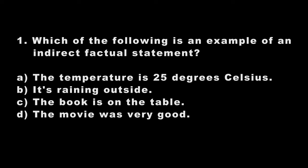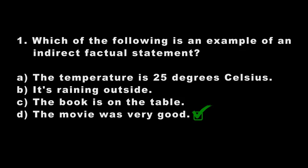Question one: which of the following is an example of an indirect factual statement? A — the temperature is 25 degrees Celsius; B — it's raining outside; C — the book is on the table; D — the movie was very good. The correct answer is D. 'The movie was very good' makes no specific factual specification — it only tells you the movie is good without stating what kind of movie it is or what it is about.